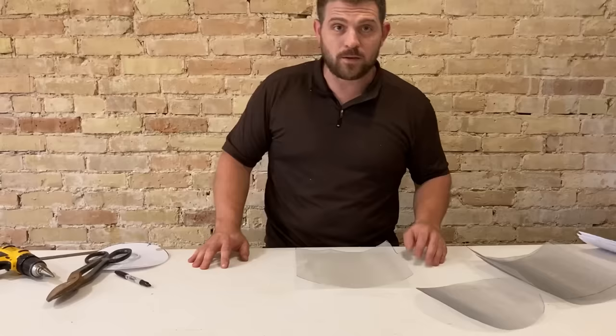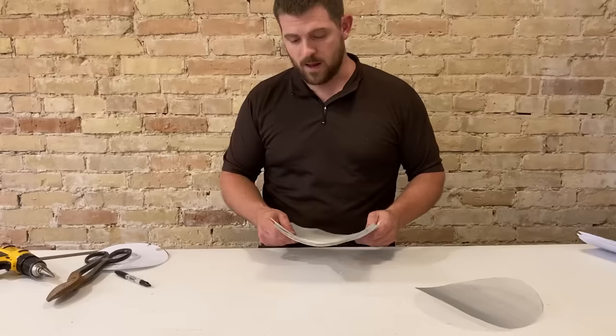Now the edges of this stuff can be pokey, so be careful. It is aluminum wire after all. It's not too bad, but you want to use caution anytime you're working with metal. Now we're going to go ahead and we're going to glue this into our pail.